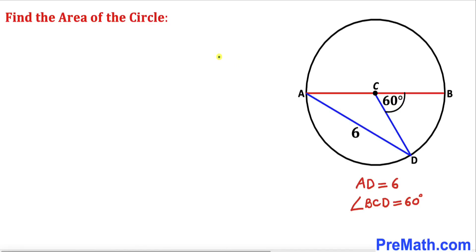Welcome to pre-math. In this video we are going to find the area of a given circle whose center is at C, where angle BCD is 60 degrees and chord AD is 6 units.